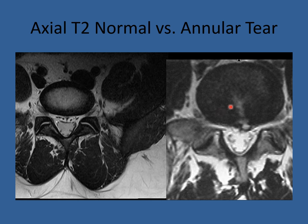Here is our first pathology: an annular tear. You'll notice the color of the disk space, which should be white, is now dark. You can see a tear going right through the annular fibers and even a small disk bulge. It doesn't compress the nerve roots, so I wouldn't expect any buttocks or leg pain, but it does tear through the posterior wall. This patient had some lower back pain.